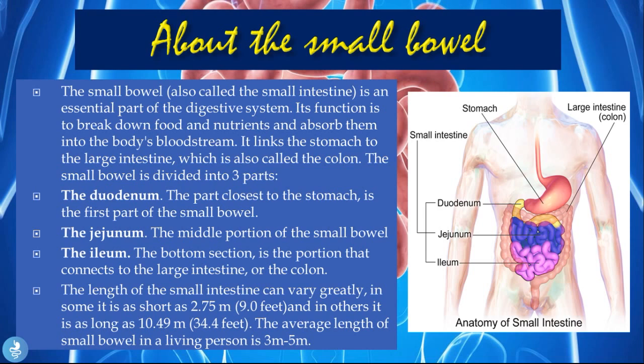The small bowel, also called the small intestine, is an essential part of the digestive system. Its function is to break down food and nutrients and absorb them into the body's bloodstream. It links the stomach to the large intestine, also called the colon. The small bowel is divided into three parts. The duodenum is the part closest to the stomach and is the first part of the small bowel — depicted here in yellow.